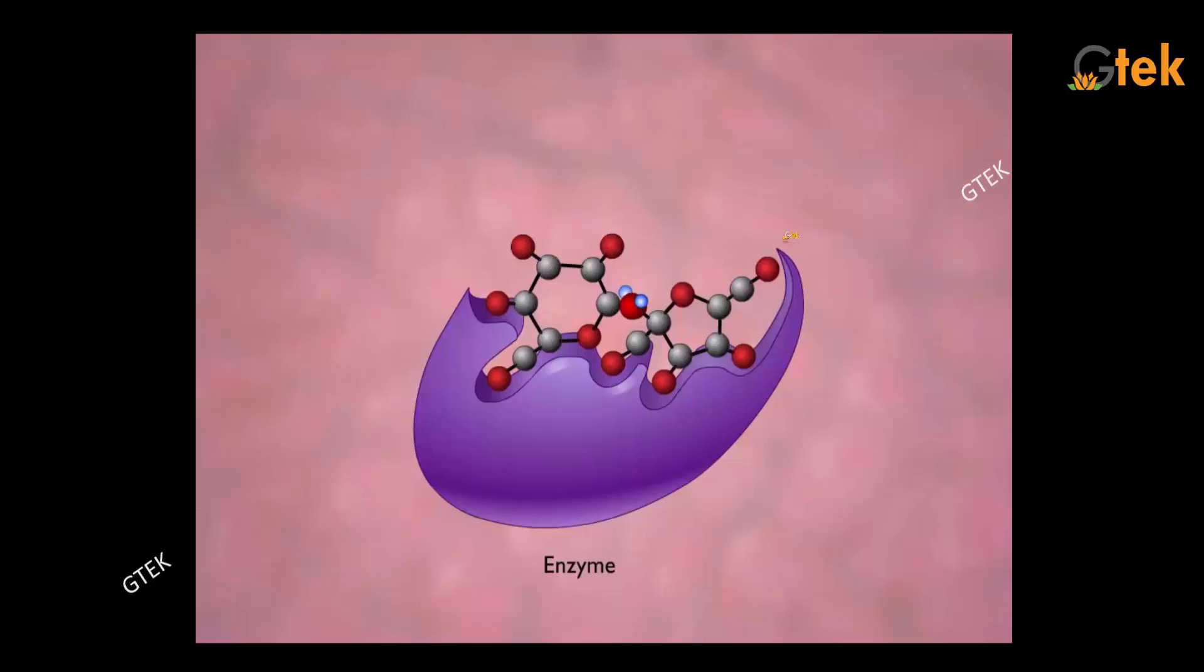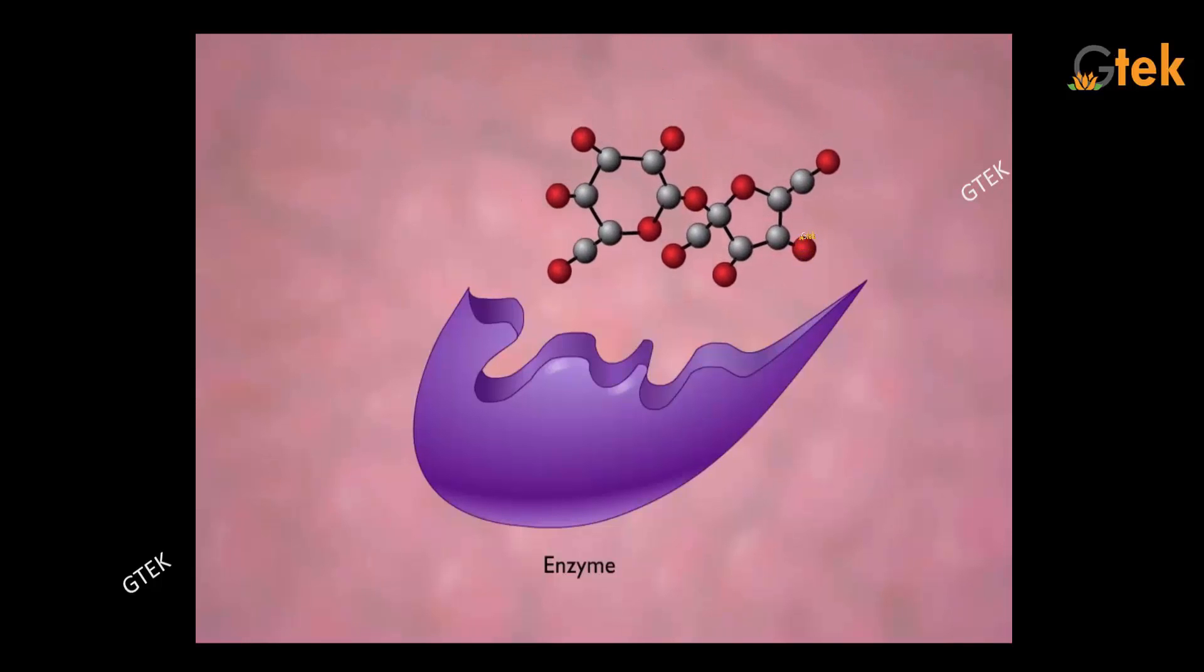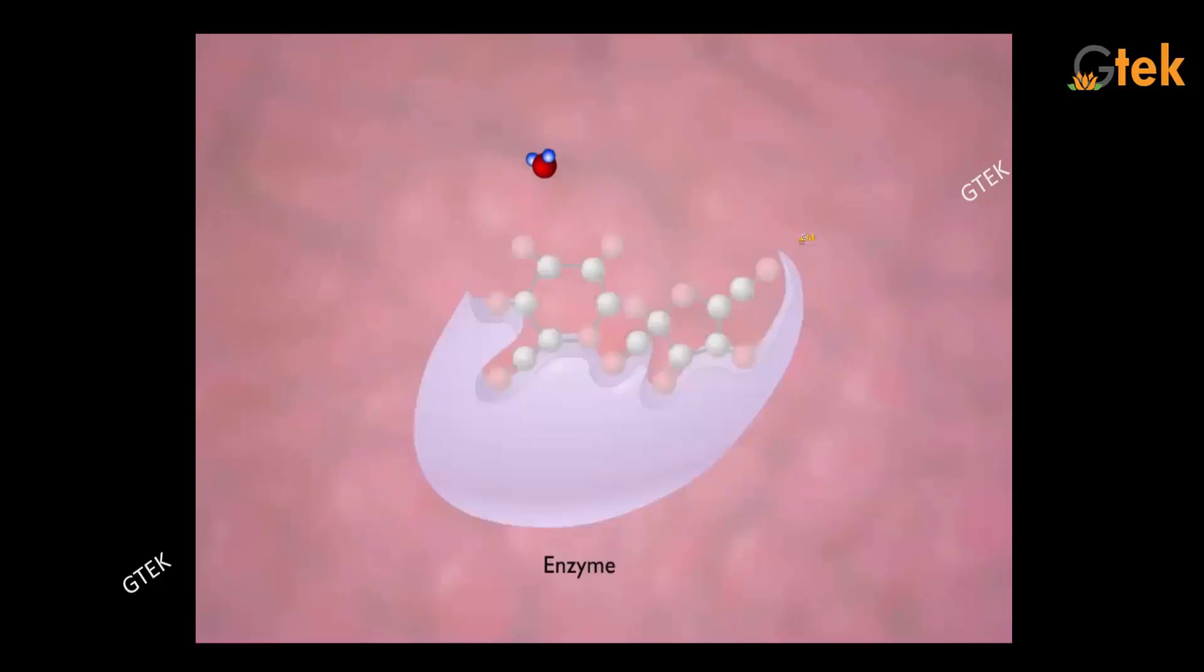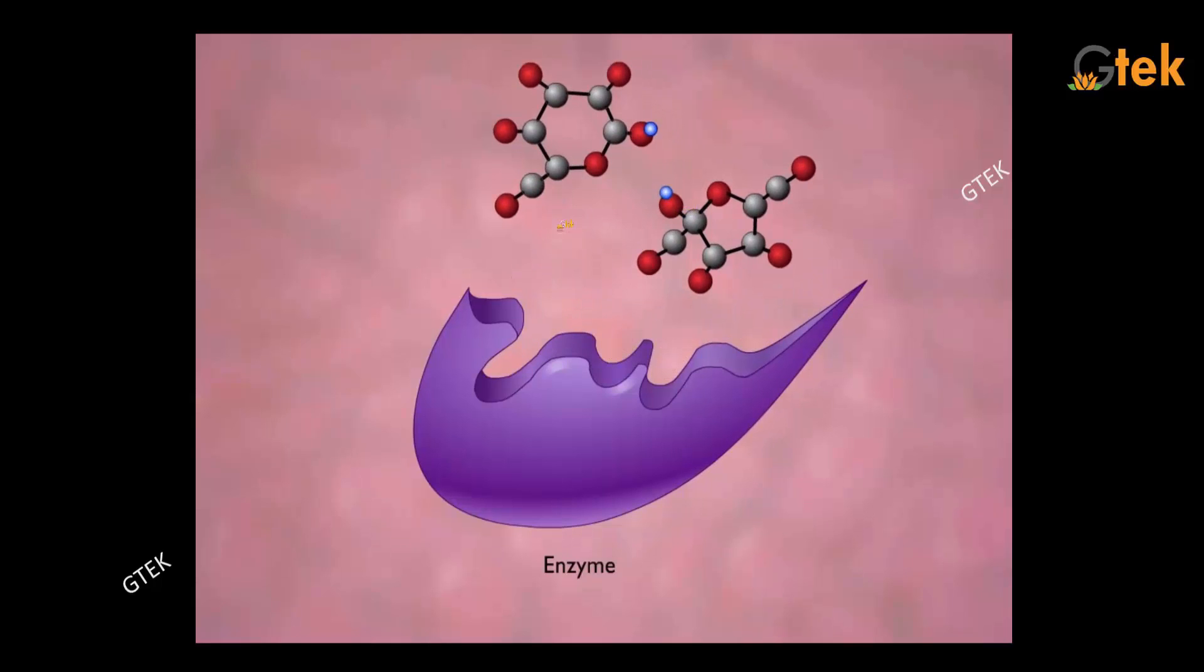Breaking the sucrose into glucose and fructose. Here is the glucose and the other one is fructose. This is how the food particles are broken into meaningful and valuable glucose and fructose molecules.